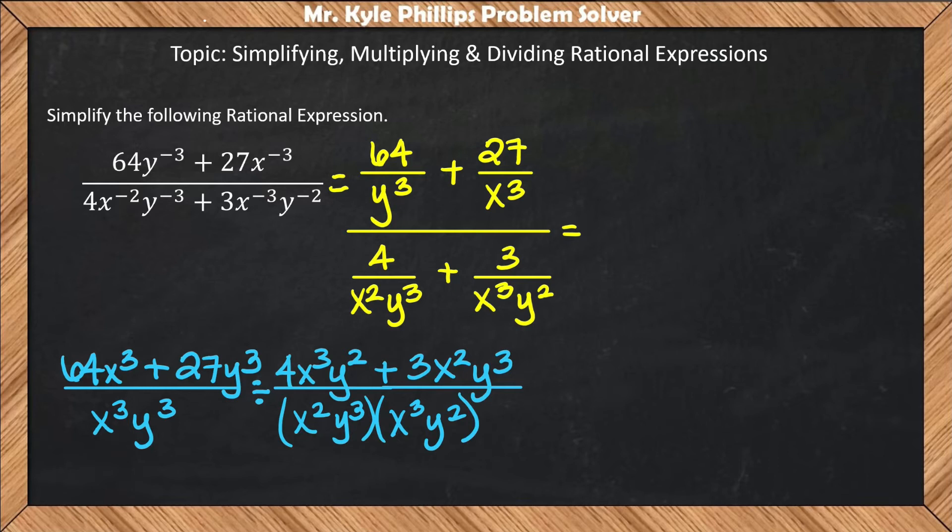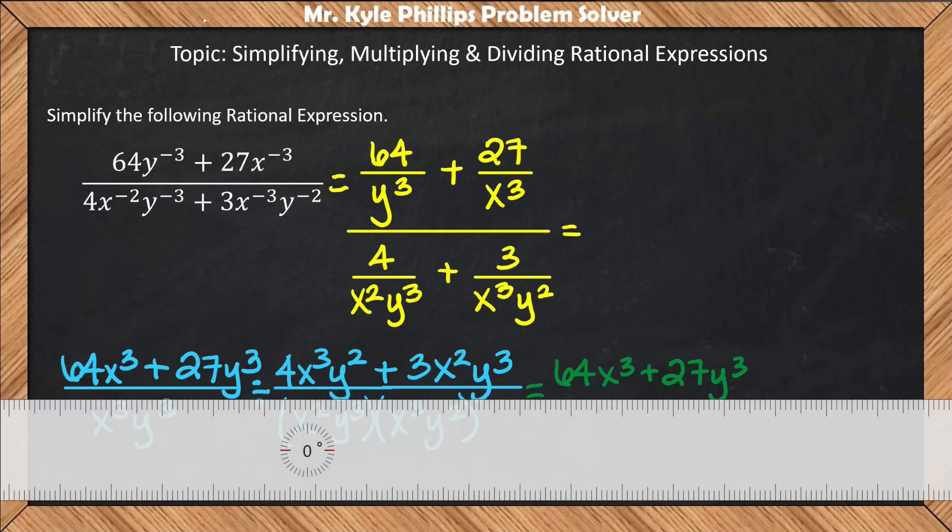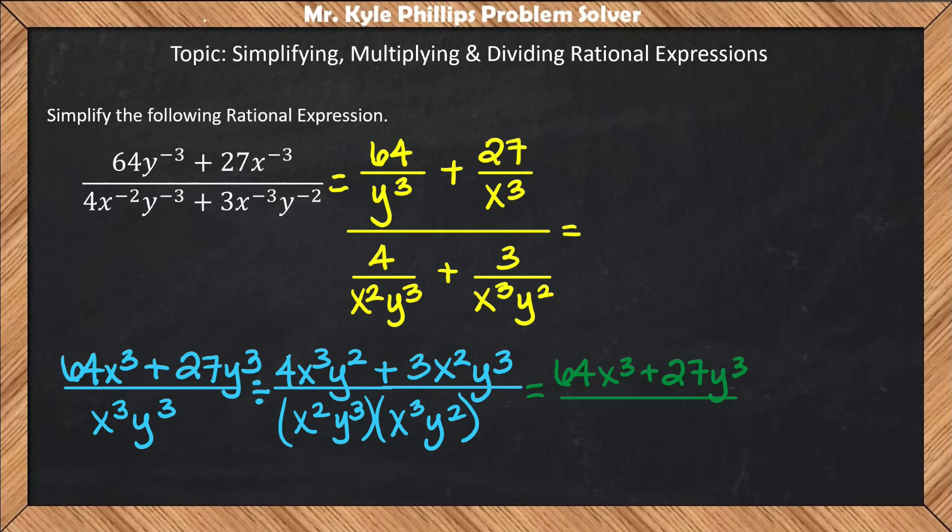So what I'll do now is remember, when you divide, you have to keep the first fraction the same, change this sign to multiplication, and then flip your second fraction. We'll have (64x³ + 27y³)/(x³y³) times...